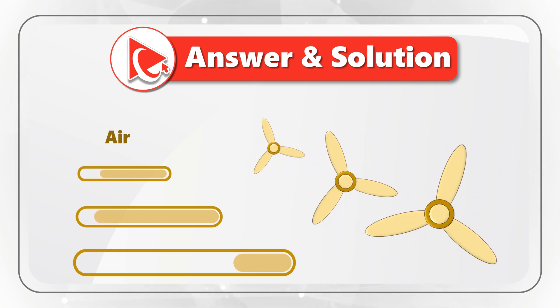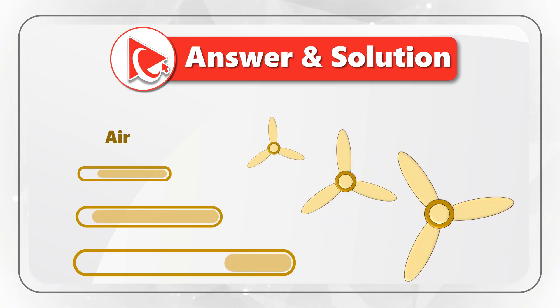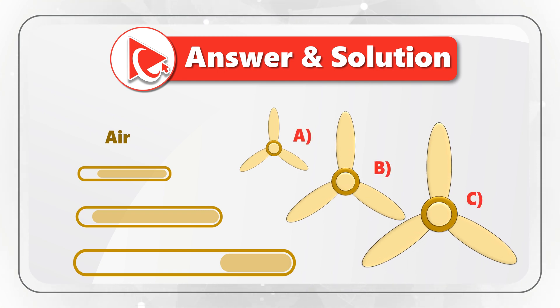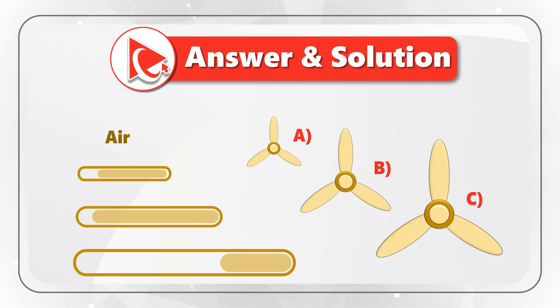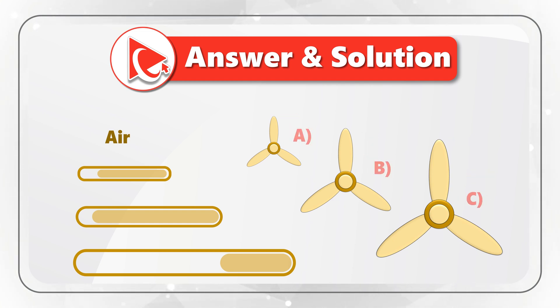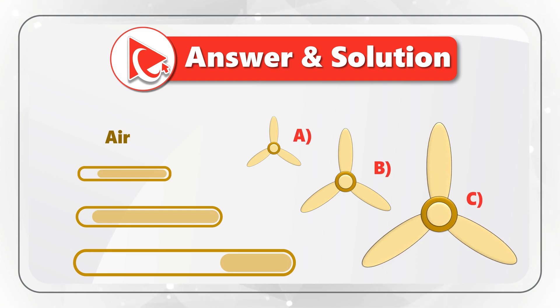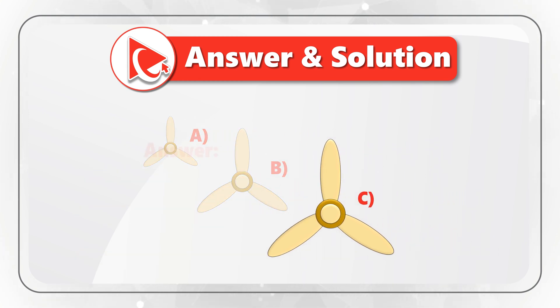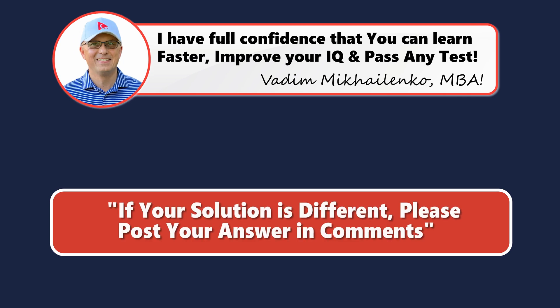Higher RPM generally results in a higher airflow rate as the fan blades move through the air at a faster rate. Fans A, B, and C all have the same design. Given that the three fans have the same design but different sizes, the fan with the largest size will throw more air. This is why the correct answer is choice C. Did you get the same answer? If not, please share your answer and rationale in comments.